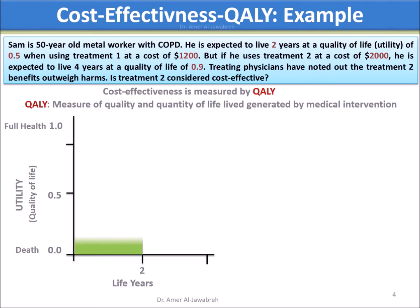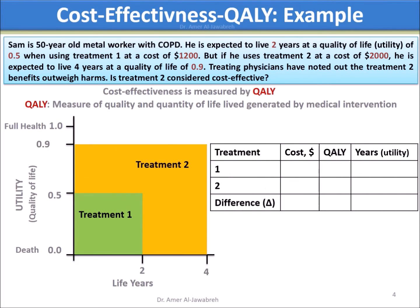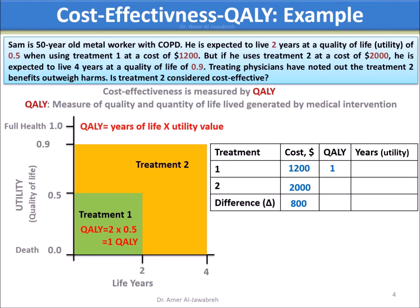Make a table and a graph as shown. Calculate QALY for Treatments 1 and 2, then calculate Delta QALY. QALY equals Years of Life times Utility Value. QALY for Treatment 1 equals 2 times 0.5, which is 1 QALY. QALY for Treatment 2 equals 4 times 0.9, which is 3.6 QALY.